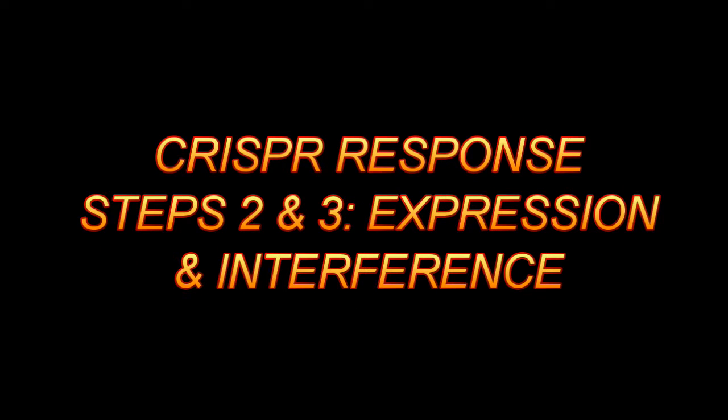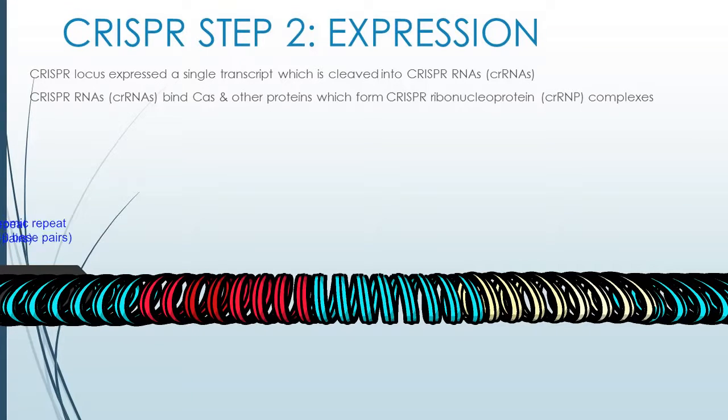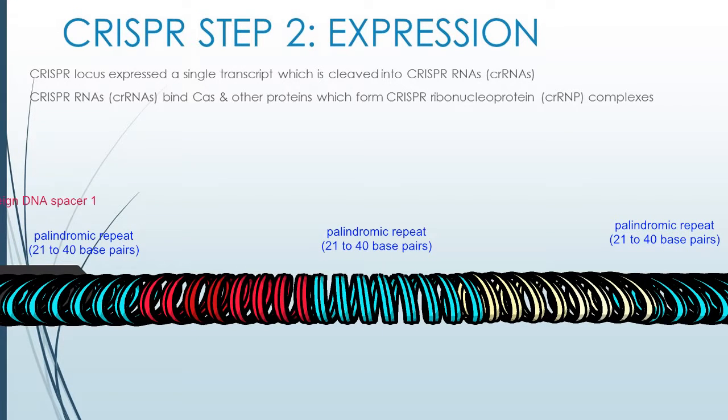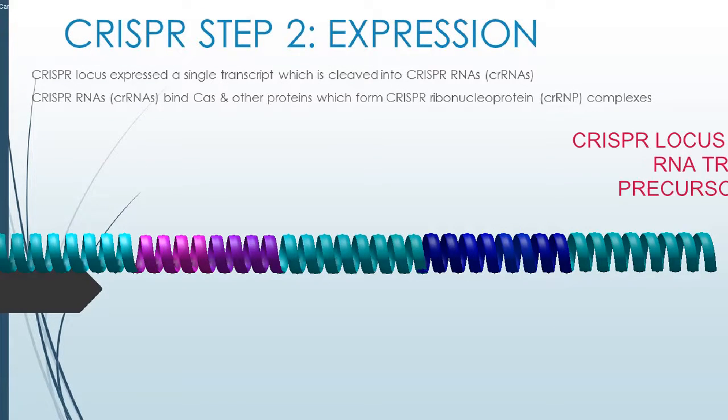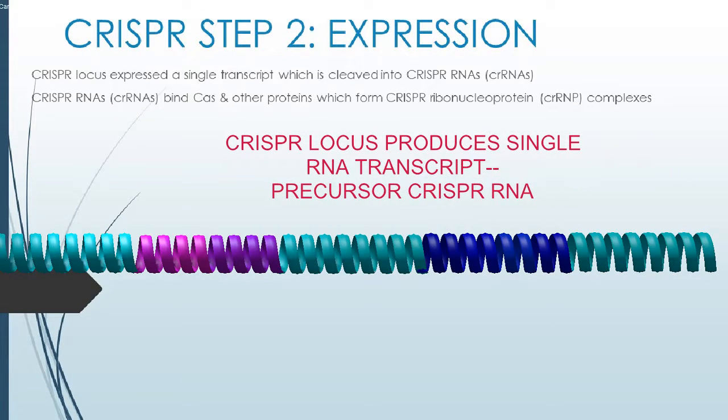In the second step of the CRISPR response, the CRISPR locus on the host DNA chromosome is expressed as a single RNA transcript. This is known as the pre-CRISPR RNA.